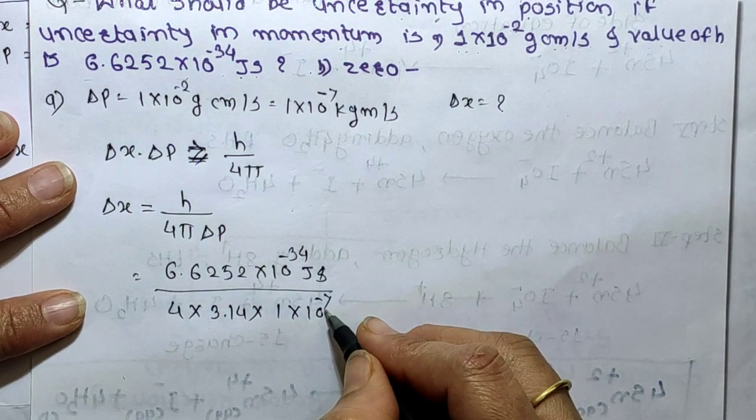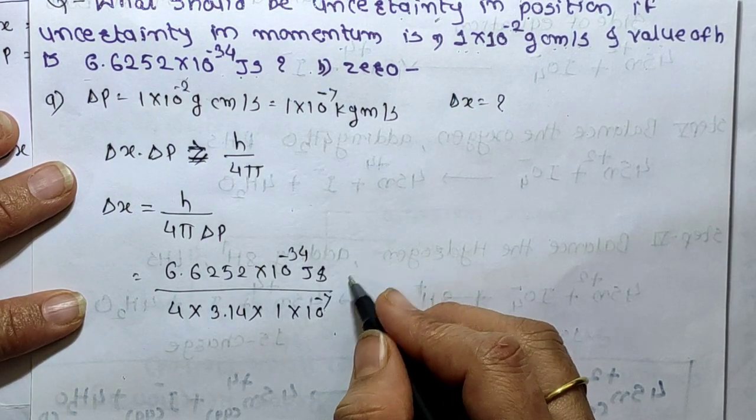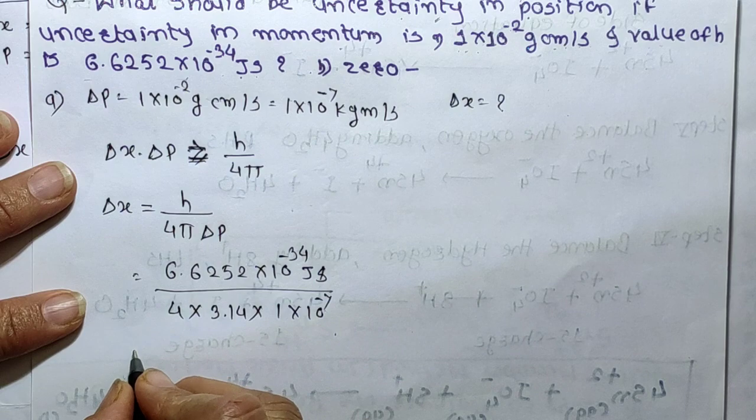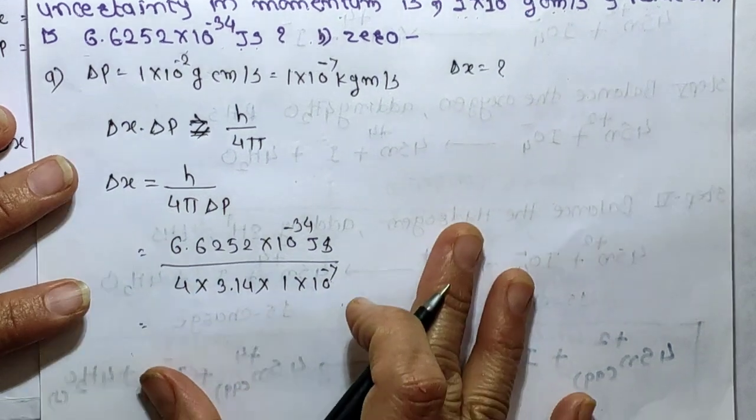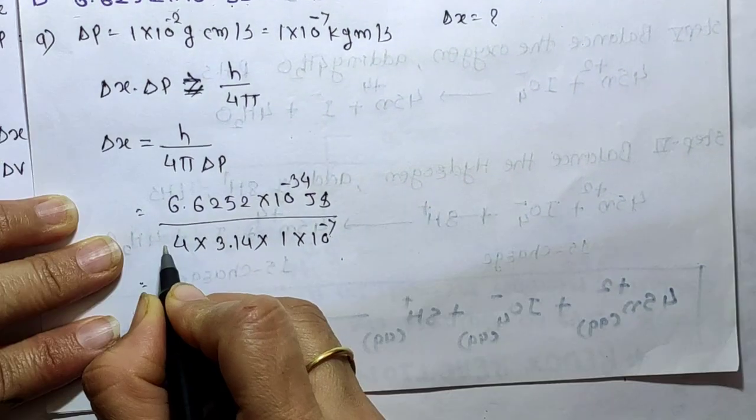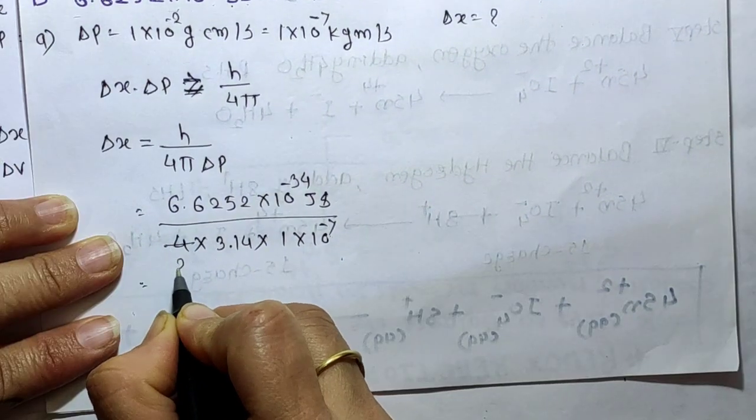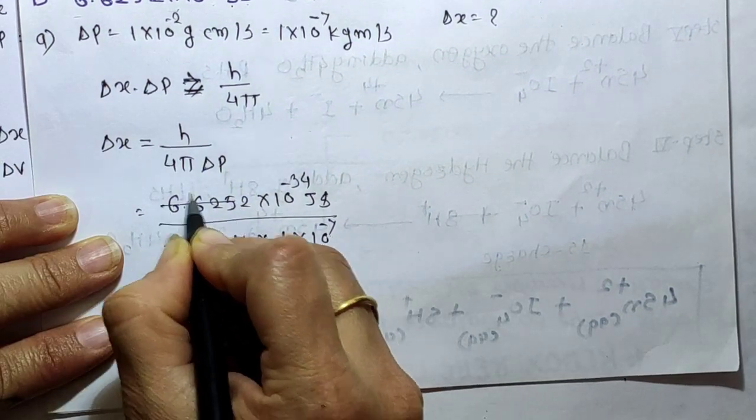Since 34 minus 7 gives minus 27 in the exponent, we now calculate the numerical part: 6.6252 divided by (4 into 3.14), step by step.